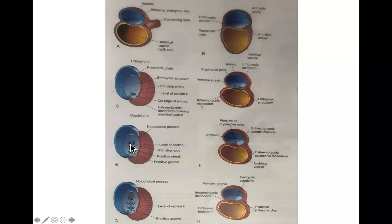Shortly after the primitive streak appears, the deep surface of the primitive streak begins to proliferate, and these cells begin to differentiate into mesoderm cells. The mesoderm layer is made up of mesoderm cells and loose connective tissue called mesenchyme. Mesoderm tissue gives rise to all the supporting tissues of the body, such as bone, cartilage, ligaments, tendons, and so on.